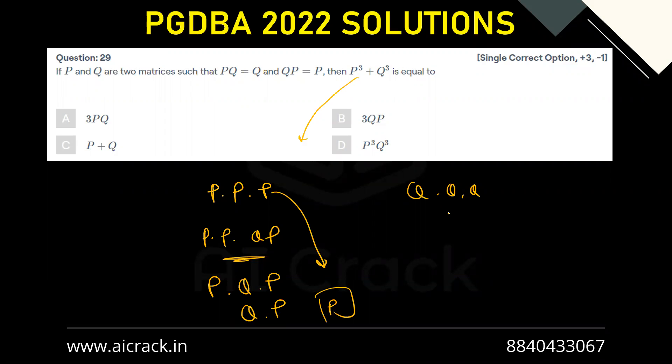Similarly, you can find out that Q dot Q dot Q can be written as PQ dot Q. Now this QP can be written as P. Now this again, QP can be written as P.